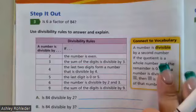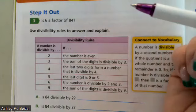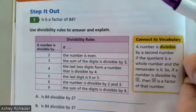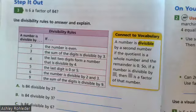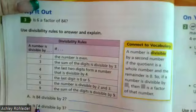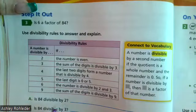So these are some divisibility rules to help you figure out if a bigger number has a factor of this, and these are actually hanging back there by the multiplication chart also. So a number is divisible by a second number if the quotient or the answer is a whole number and the remainder is zero. So is 84 divisible by two? A number can be divisible by two if the number is even. Is 84 even? Yes. So can it be divisible by two? Yes.